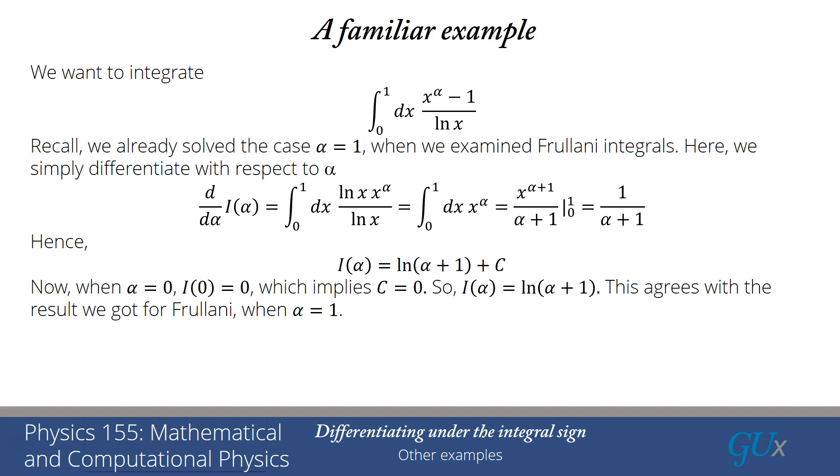Now that I know c is equal to 0, we've just learned that i of alpha is log alpha plus 1. And that agrees with the result we got from the Frulani method, which involved alpha equals 1, where we found that the integral was log 2. But here we've now solved it for all powers. So it's a really powerful method that this Feynman integration has given us to solve these kinds of problems. And I hope you'll be able to appreciate and use this technique in the future when you encounter difficult kinds of integrals like this.